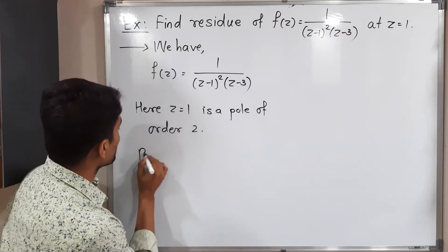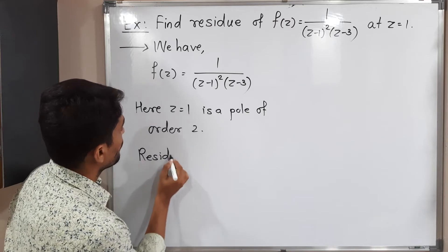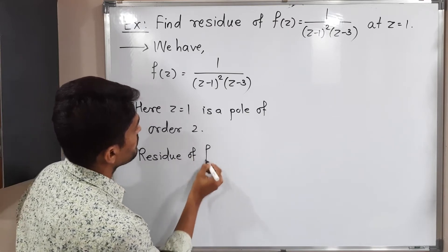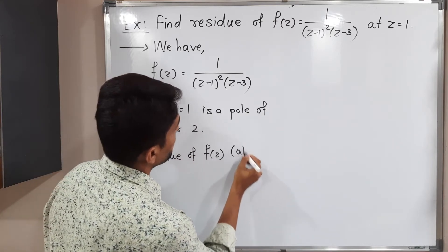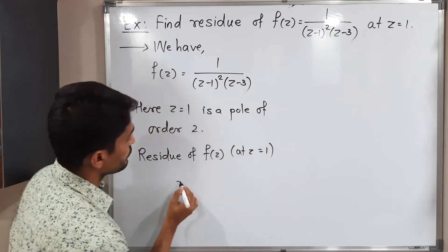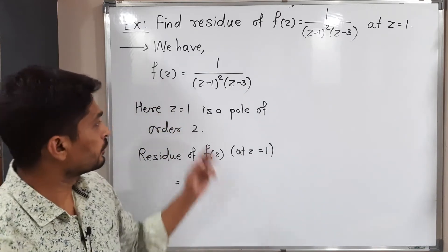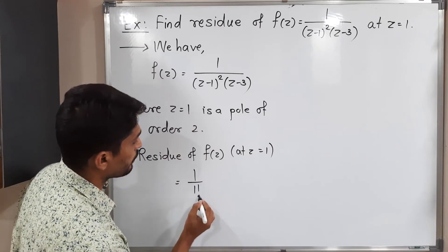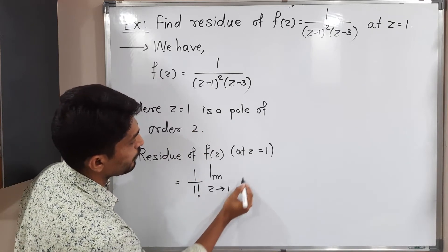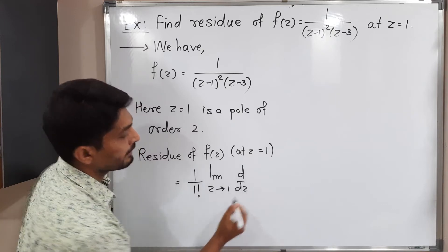Let us use it. Residue of f(z) at z equals 1. I am finding. This is equal to 1 upon (n minus 1) factorial. 2 minus 1 - that means I should write 1 factorial. Limit z tends to 1. We have to take the derivative.